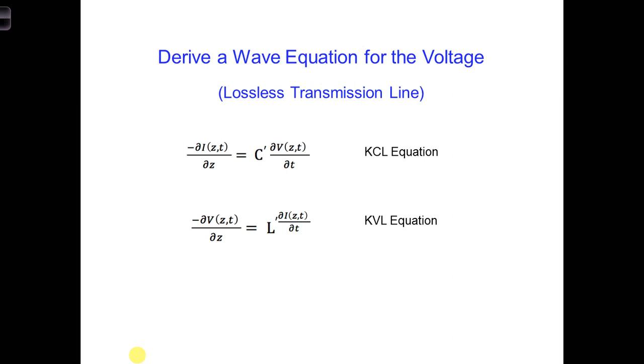Looking at the two equations shown here for a lossless transmission line, how many unknowns are there? If we know what transmission line we're using, then we either know or could find out the transmission line parameters for it. Namely, C' and L'.